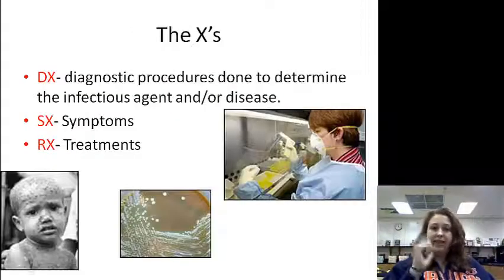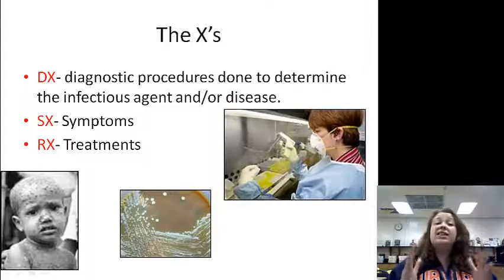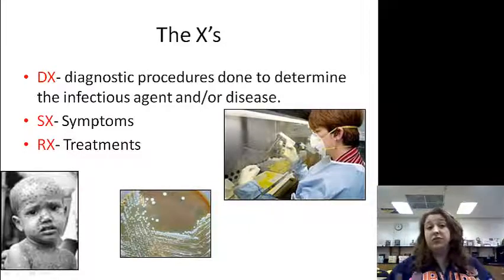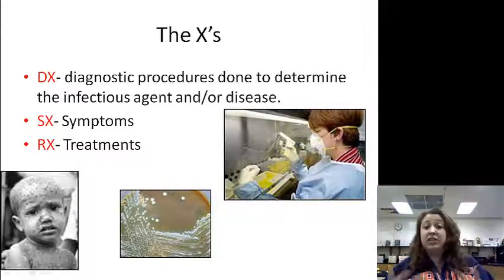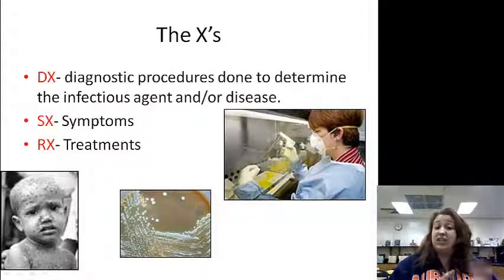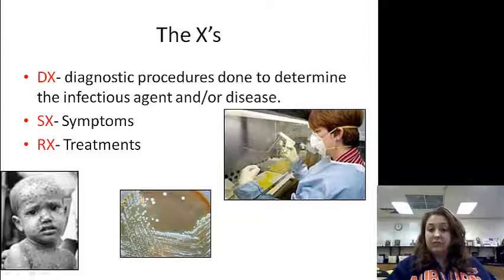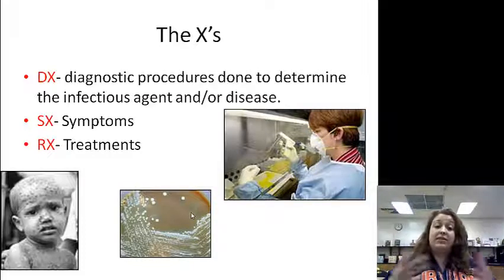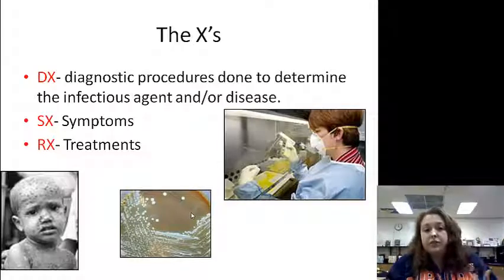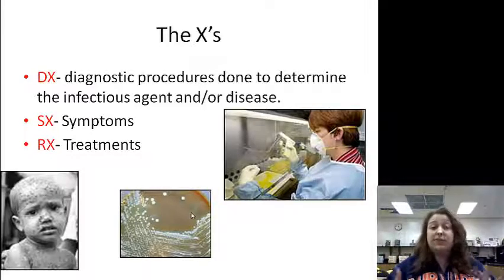Now the X abbreviations: DX, SX, and RX. These are shorthands you may learn if you go into pharmacy or a doctor educational track. DX is a diagnostic procedure done to identify the infectious agent or disease — for example, streaking a sample out on a plate to determine what the infectious agent is. SX is the symptom, so wherever you see SX, those are going to be the symptoms. RX is typically the drugs, prescriptions, and treatments for the disease or infection.